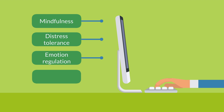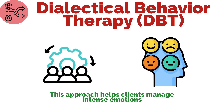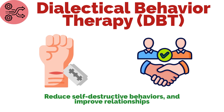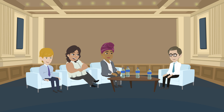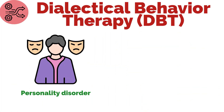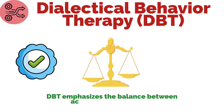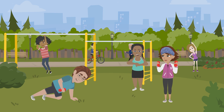DBT teaches four key skills: mindfulness, distress tolerance, emotion regulation, and interpersonal effectiveness. This approach helps clients manage intense emotions, reduce self-destructive behaviors, and improve relationships. DBT typically involves both individual therapy and group skills training sessions. Originally developed for borderline personality disorder, it is now used for various issues involving emotional dysregulation.